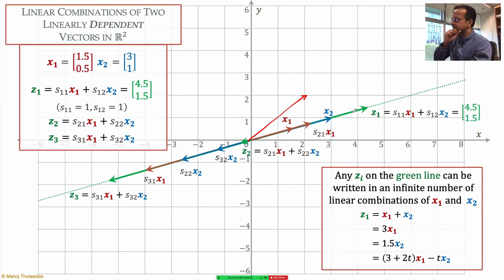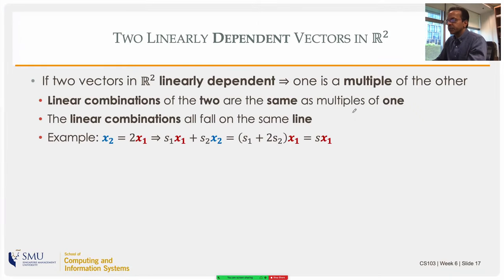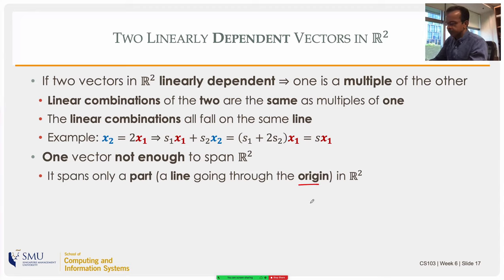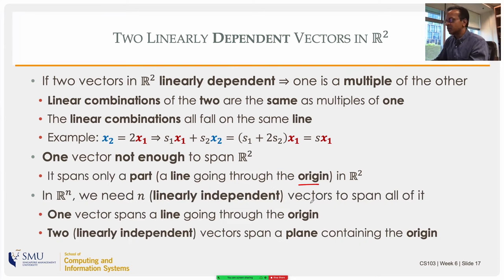If I draw a vector outside the green dotted line, it cannot be written as a linear combination of x1 and x2, because whatever I do with these vectors I cannot get outside that line. This is analogous to a system of linear equations with no solution. So two linearly dependent vectors in R2 span only one line through the origin, and in effect you have only one independent vector.